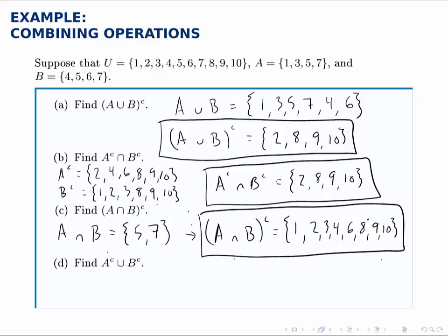And finally, when we do the last one, we've already found A complement and B complement. So to take their union, again, we'll start with everything in A complement: 2, 4, 6, 8, 9, and 10. And then include everything from B complement that we don't already have. So we'll include the 1 and the 3.